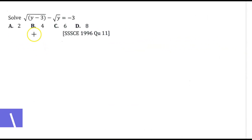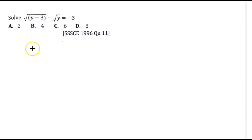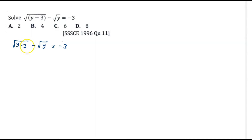Our first example is SSE 1996 question number 11, which says: solve square root of (y minus 3) minus square root of y, all equal to negative 3. Before we can solve equations involving surds, it is mostly advisable to get rid of the radical signs. In order to do that, it is advisable to ensure that the radical sign always has another term that does not have a radical sign.